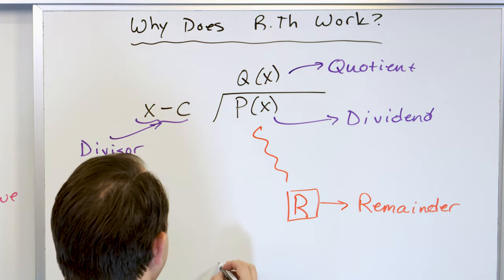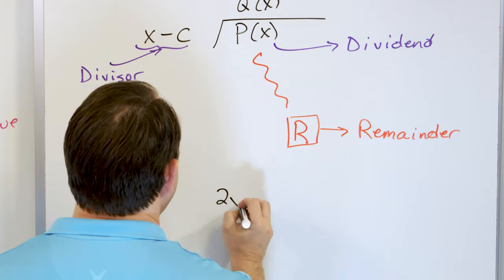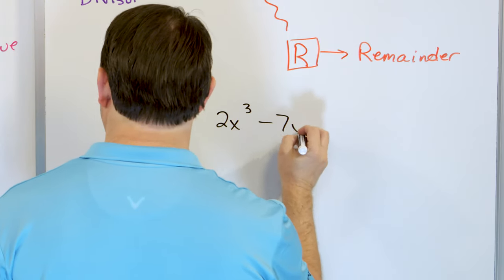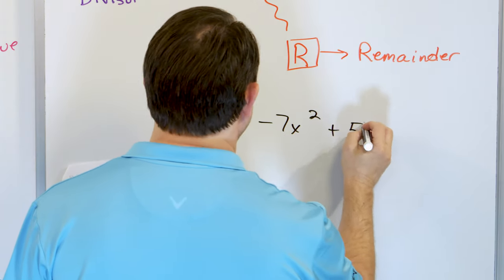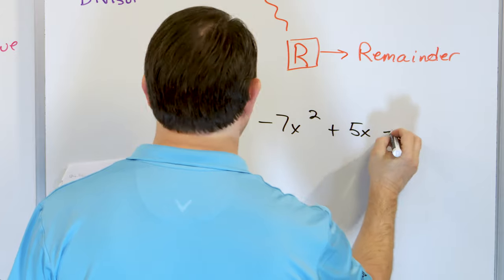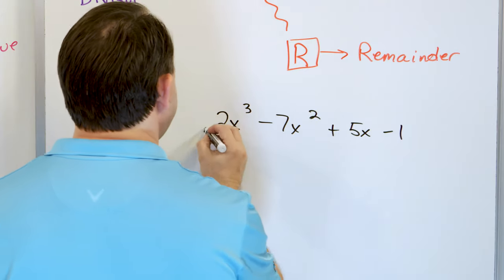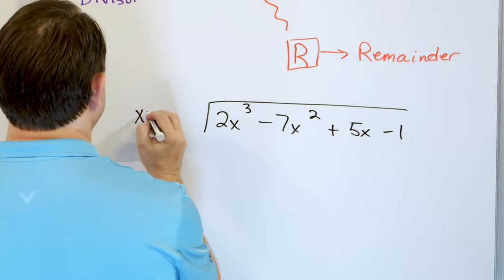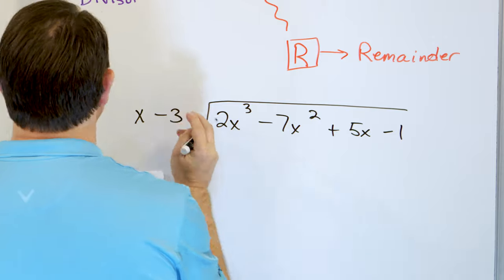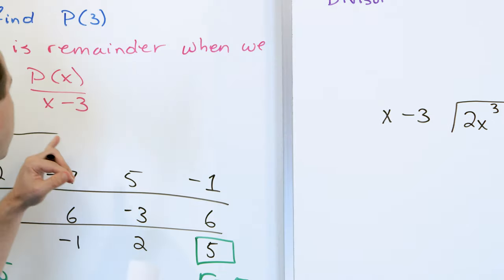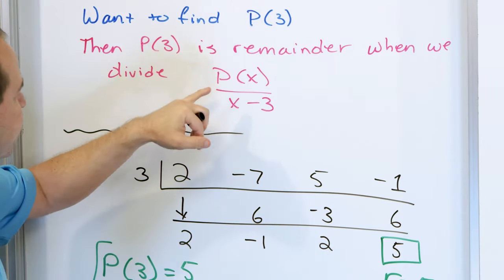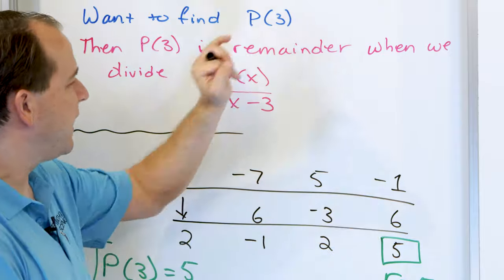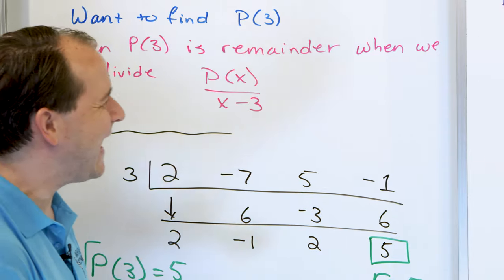For this polynomial — 2x cubed minus 7x squared plus 5x minus 1 — we were dividing it by x minus 3. We said when we take the polynomial and divide by x minus 3, the remainder will be the value p evaluated at 3. So let's verify what the remainder is.